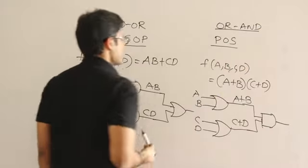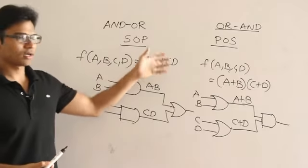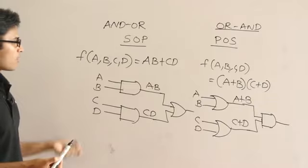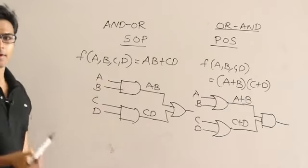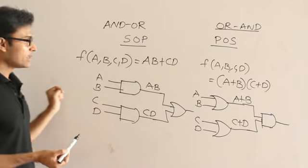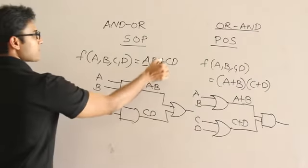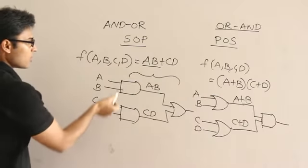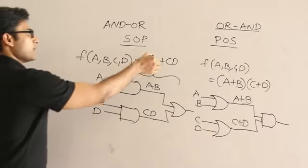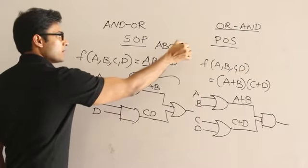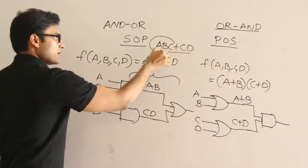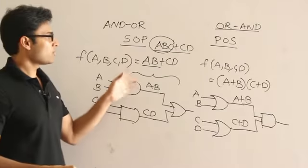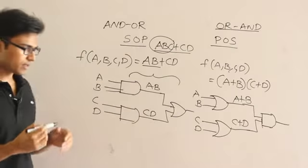Any function can be implemented this way. One important thing to keep in mind is how many inputs you give to one gate — that is called fan-in. Fan-in means how many inputs are going to come into a gate. Realizing a function in only two levels is possible when you allow any number of fan-in.